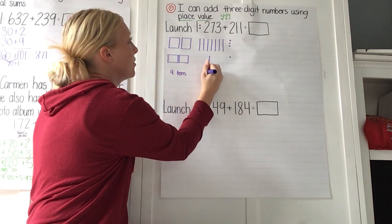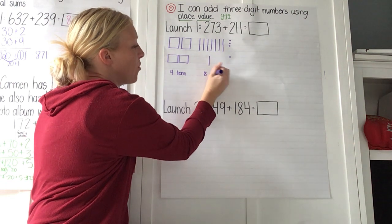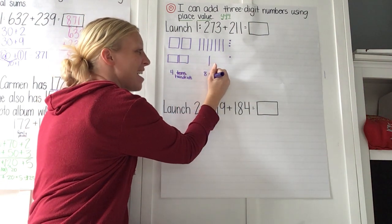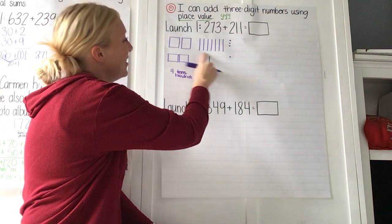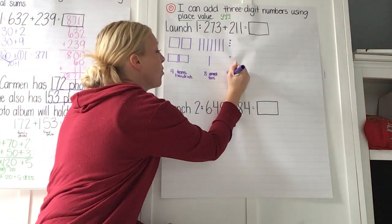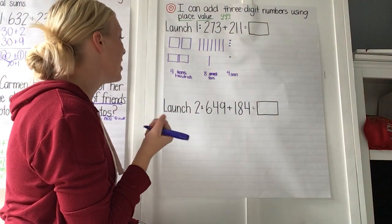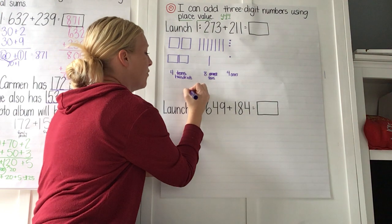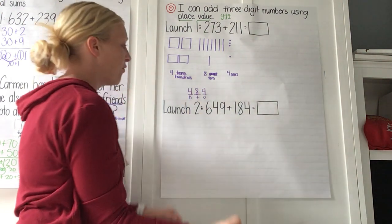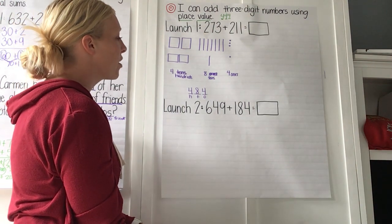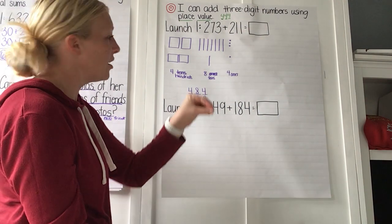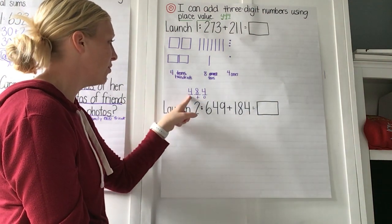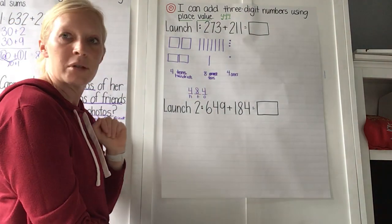So you had 4 tens together, then 8 tens — 7 and 1 more is 8. And then 4 ones. So then what was your total? You had 4 hundreds, 8 tens, and 4 ones, so you had 484. You just thought: I have my three-digit number, my hundreds, my tens, and my ones. There are 4 hundreds, 8 tens, and 4 ones.